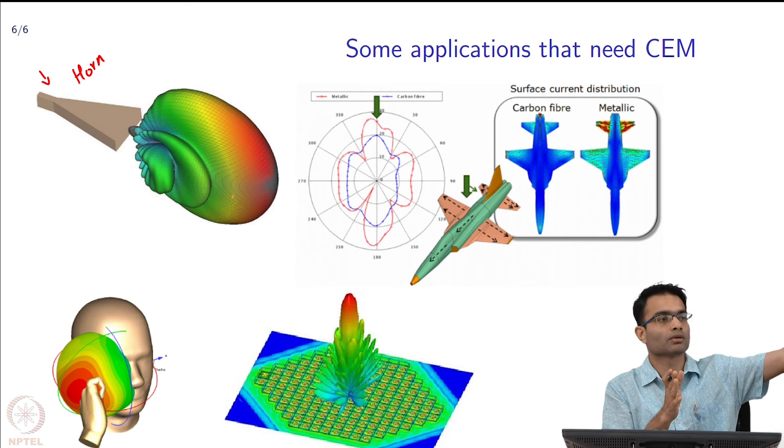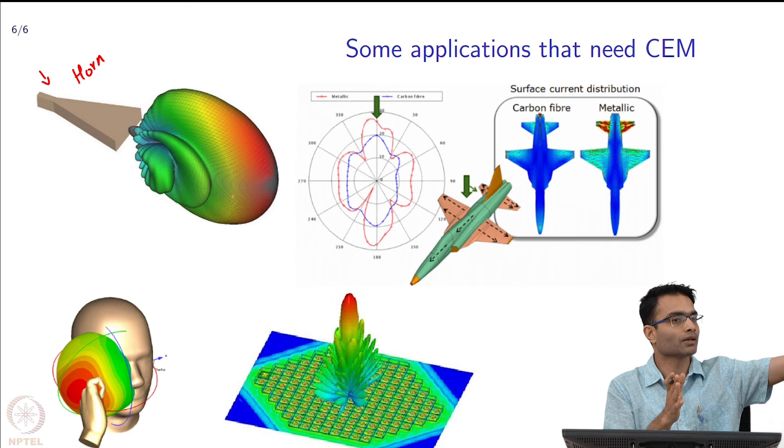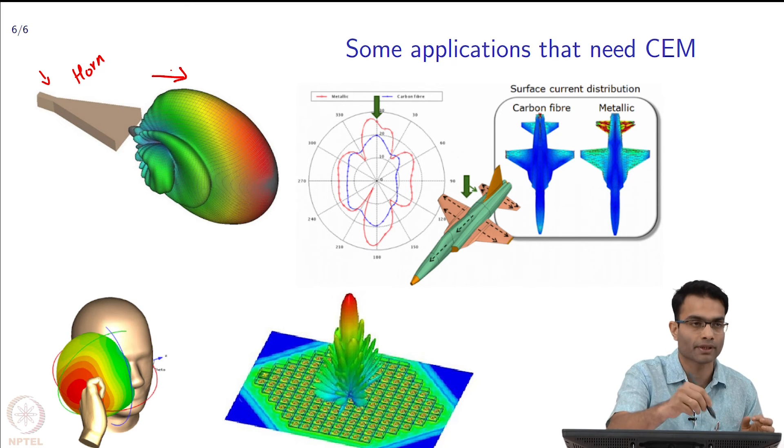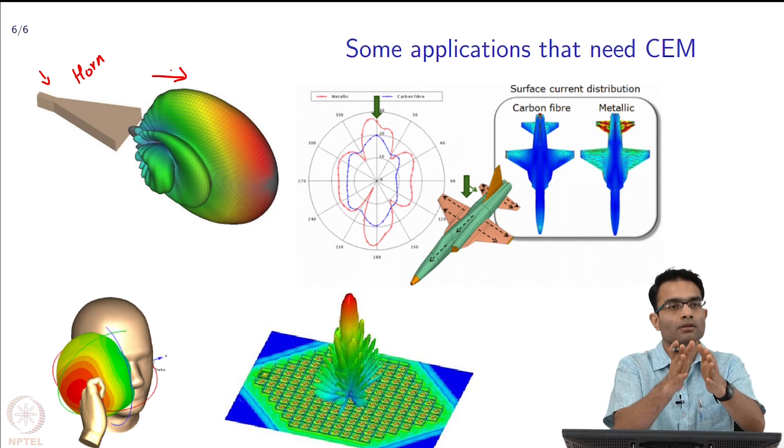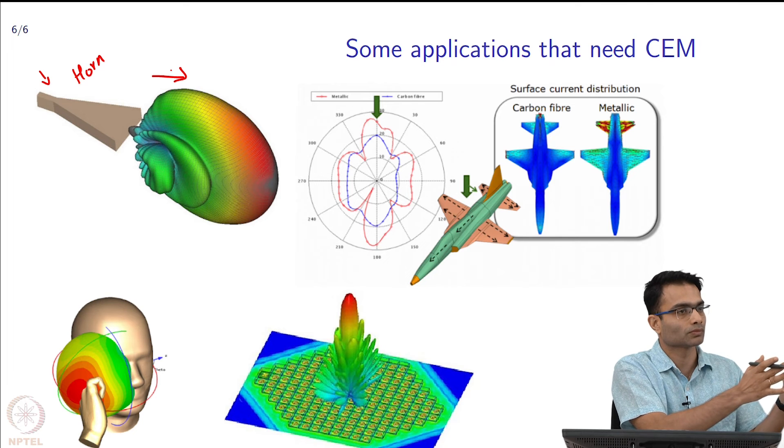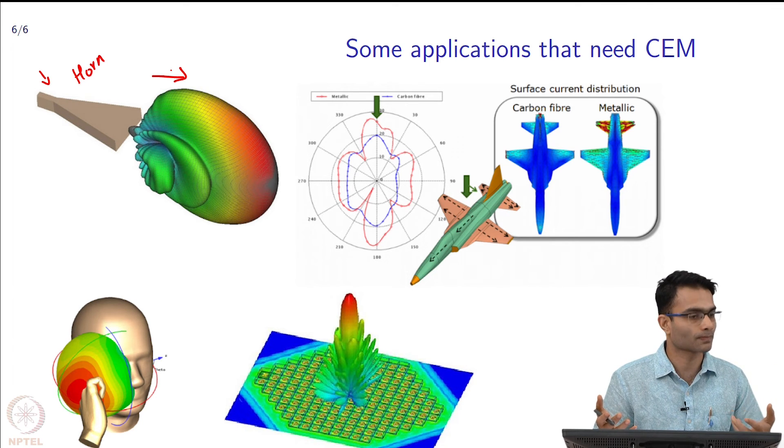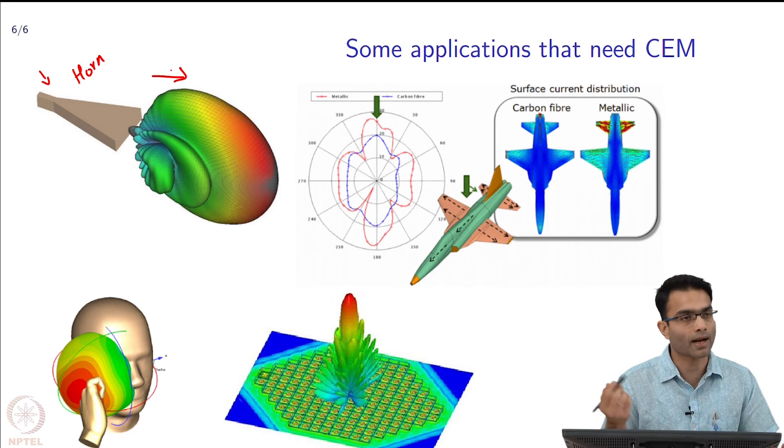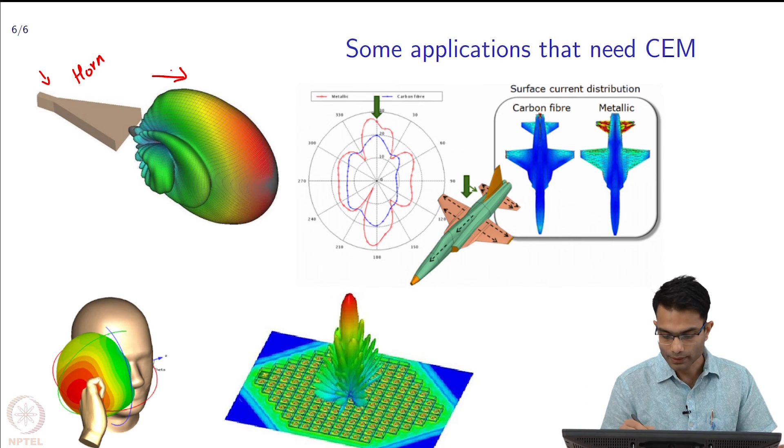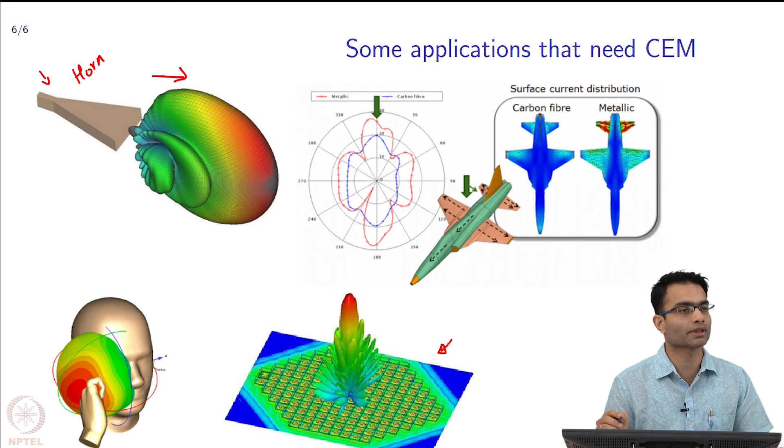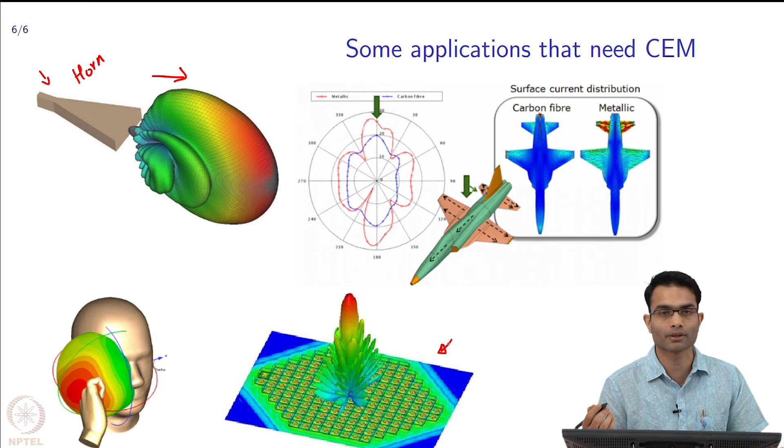I want to communicate from here to that point and I want to make sure that no field goes to some eavesdropper on one side. I have to make sure that this big beam is only in one direction not in the other direction. How will you know it? You have to solve Maxwell's equations numerically and get this. That is the example of an antenna pattern.